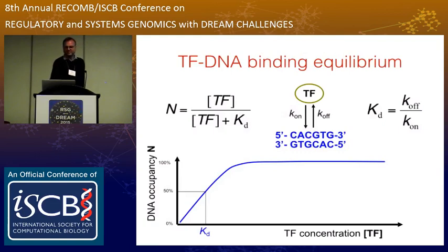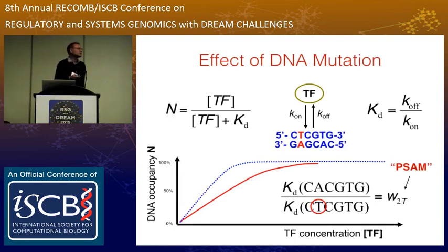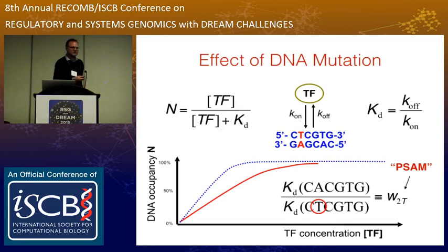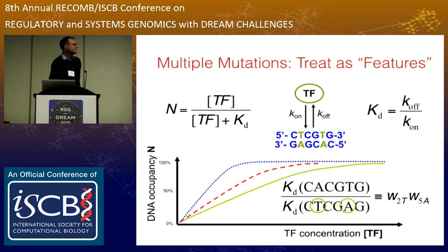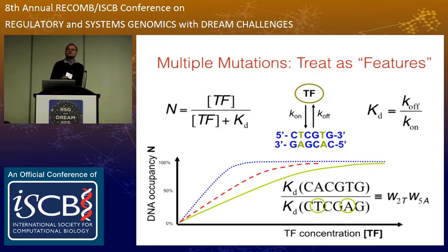This is based on equilibrium binding. A lot of current methods are based on the simple idea of binding equilibrium: if a protein is binding to DNA and you make a mutation to the binding site, you get a reduction in affinity that you could call an element of a weight matrix, an affinity matrix, or frequency matrix. This is really the e to the power of delta-delta-G — the change in binding free energy due to that mutation in the DNA sequence. If you have more than one mutation, you multiply the reductions in affinity or add up the free energy changes.